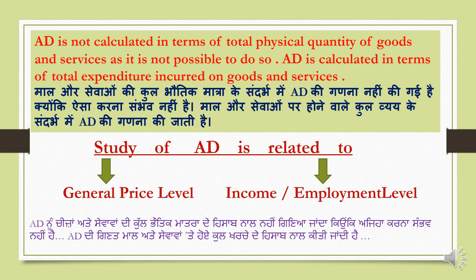It should be clear in mind: aggregate demand is not calculated in terms of the total physical quantity of goods and services. Aggregate demand is always calculated in terms of total expenditure incurred on goods and services.